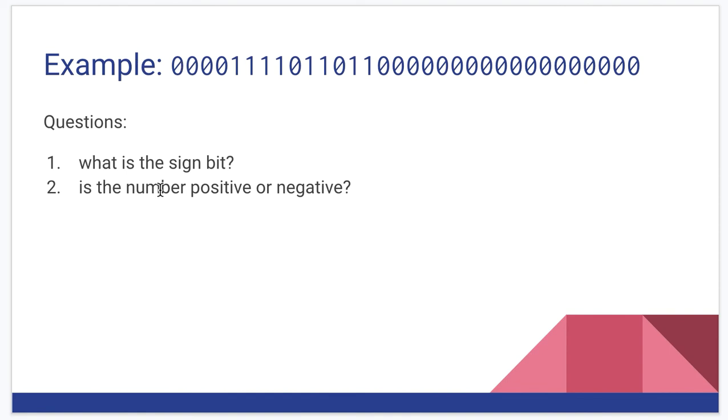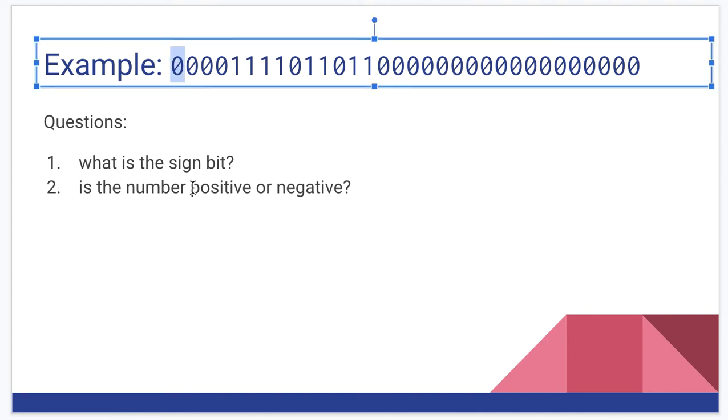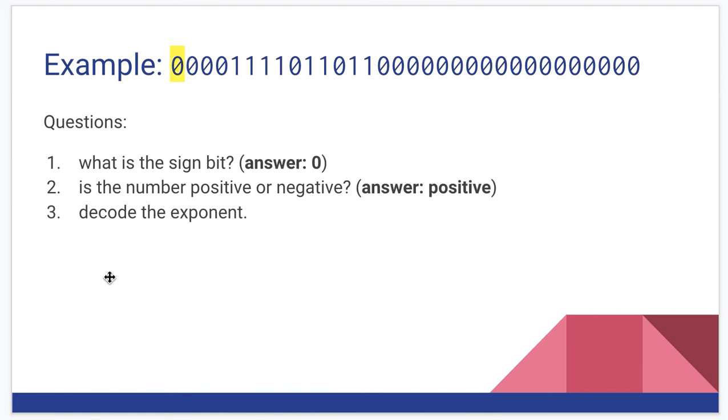All right so how do we take this binary representation of a floating point and decode it into a decimal representation. So we're going to have a long-running example and I'm going to ask some questions as we go along. So here's a 32-bit value. We could interpret it as a 32-bit integer but in this situation we're going to interpret it as a 32-bit floating point. First question is easy. Which one is the sign bit? And if you answered zero, this leftmost most significant bit, that is the sign bit so you got that one right. Is this number positive or negative? It's zero so it's positive. If it were one it's a negative just like when we looked at two's complement sign values.